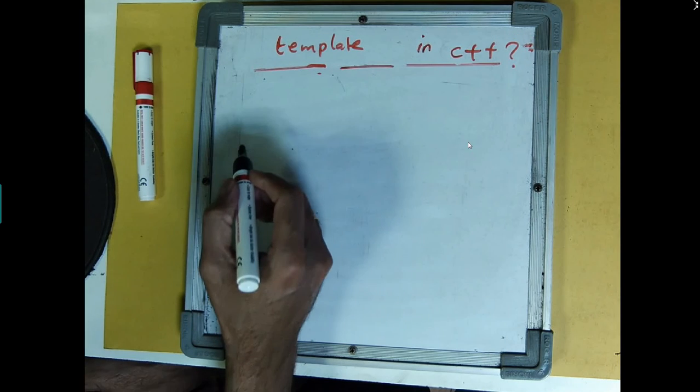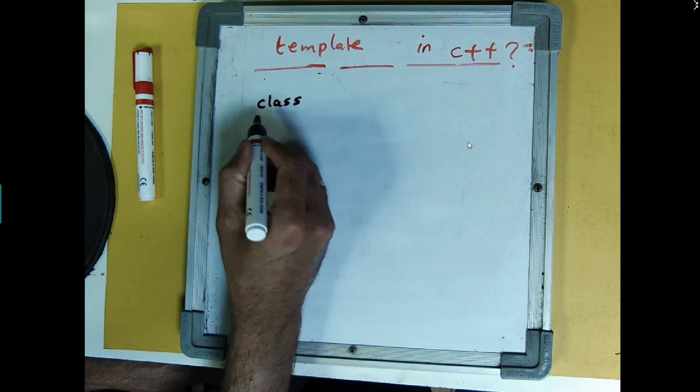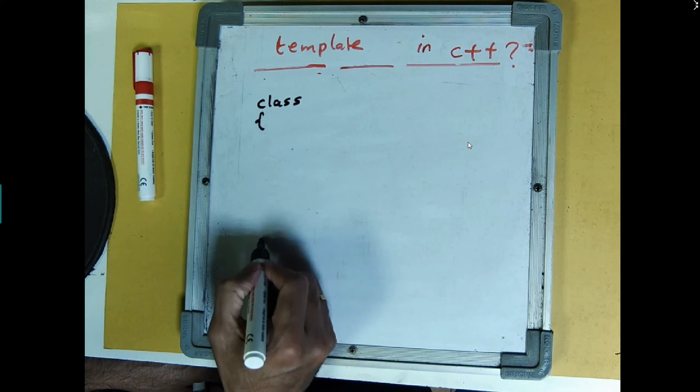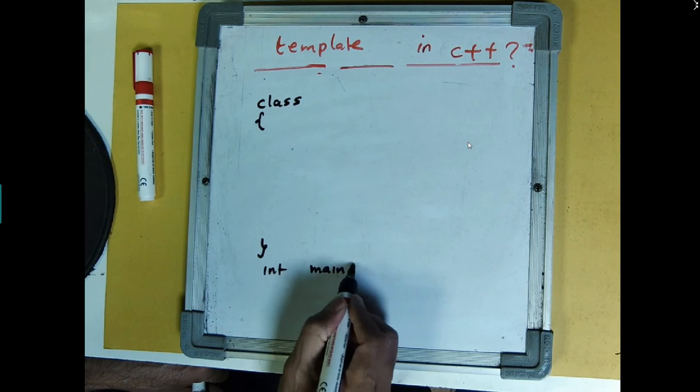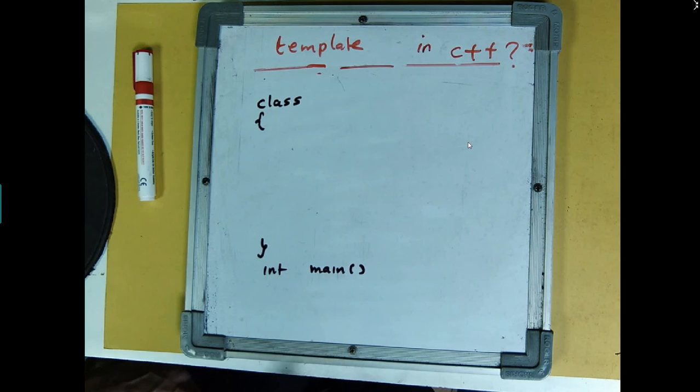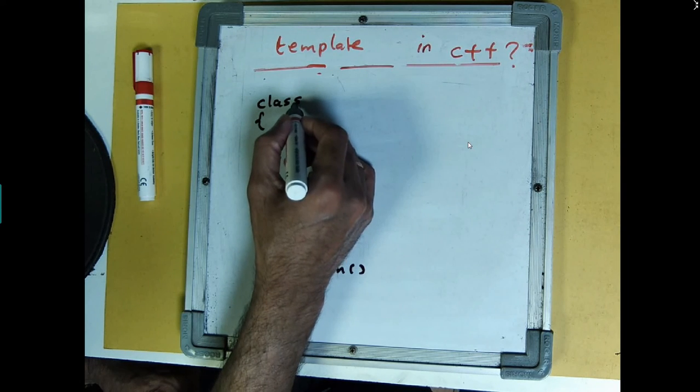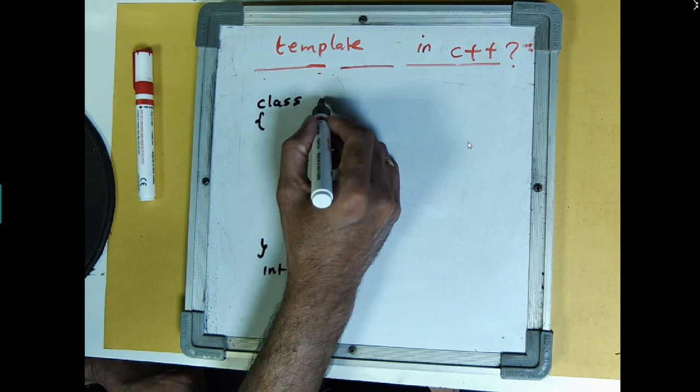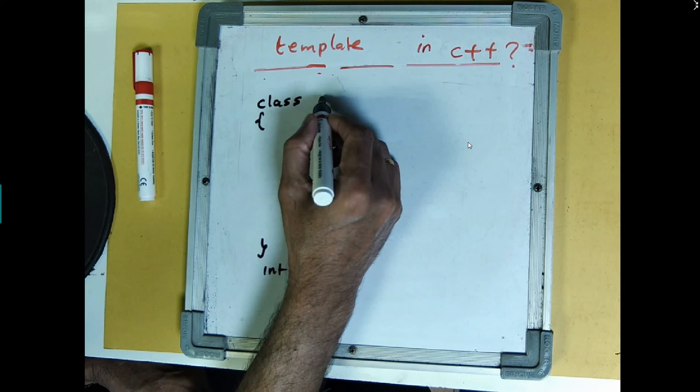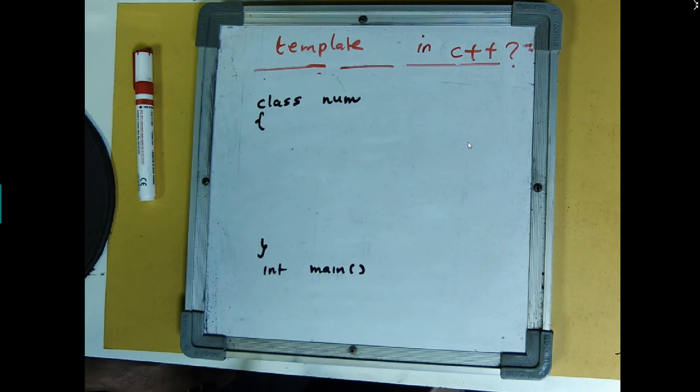Let's consider an example that there is a class and there is a main function which is outside, like in any other class. Now, let's give a name to this class, let's say, num.